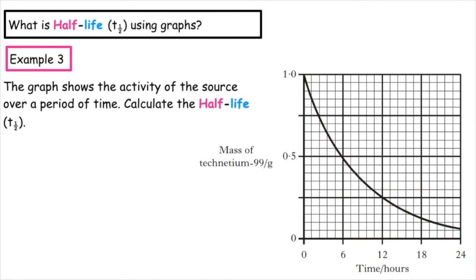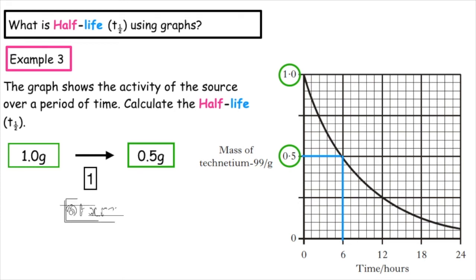This third example wants us to calculate the half-life of technetium-99 and the unit we're working in is grams. So on the y-axis, the highest plot at time zero is one gram. If it undergoes one half-life, half of the mass of one gram would give us a total of 0.5 grams. So we circle that on the y-axis. We draw a line from the 0.5 on the y-axis until we meet the curve, which is plotted on the graph. And then we extrapolate that down to the x-axis.